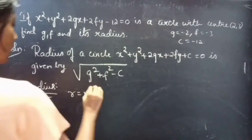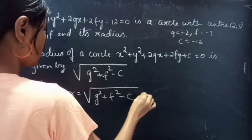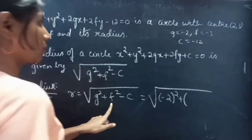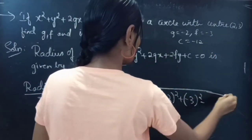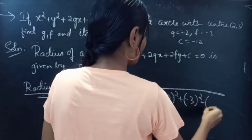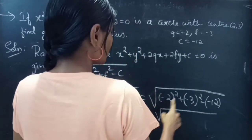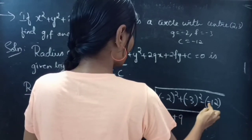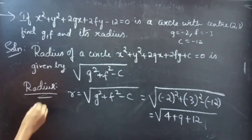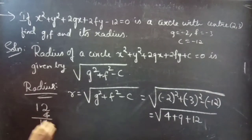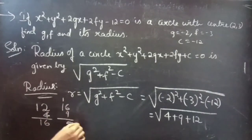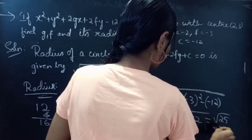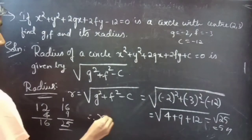Radius r equals to square root of g squared plus f squared minus c, equal to square root of (minus 2) squared plus (minus 3) squared minus (minus 12). That is square root of 4 plus 9 plus 12. 12 plus 4 is 16, 16 plus 9 is 25. So this is equal to square root of 25. Square root of 25 is 5. Therefore, r equals to 5.